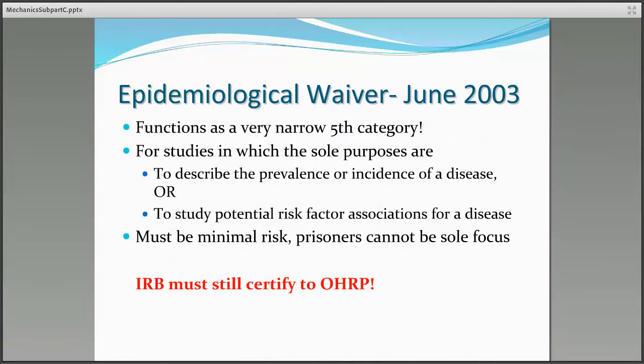There is a very narrow fifth category of permissible research: the epidemiologic waiver of June 2003. Despite the word waiver, the study must still be reviewed under Subpart C and certified to OHRP. This is reserved for studies whose sole purposes are to describe the prevalence or incidence of a disease or to study potential risk factor associations for a disease. The study must be no more than minimal risk, prisoners cannot be the sole focus, and the IRB must still certify the study to OHRP.